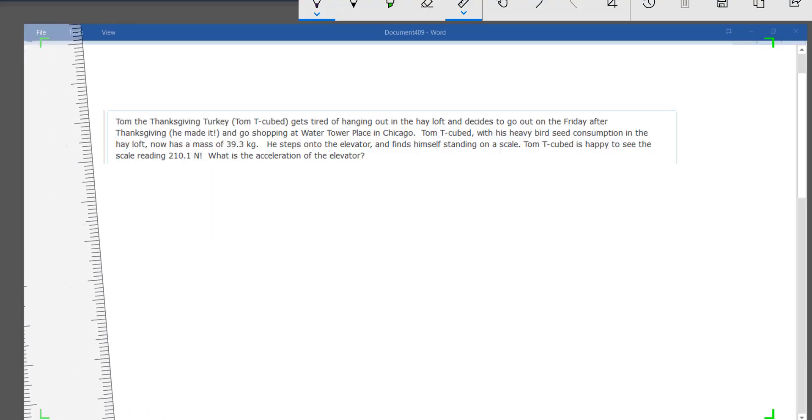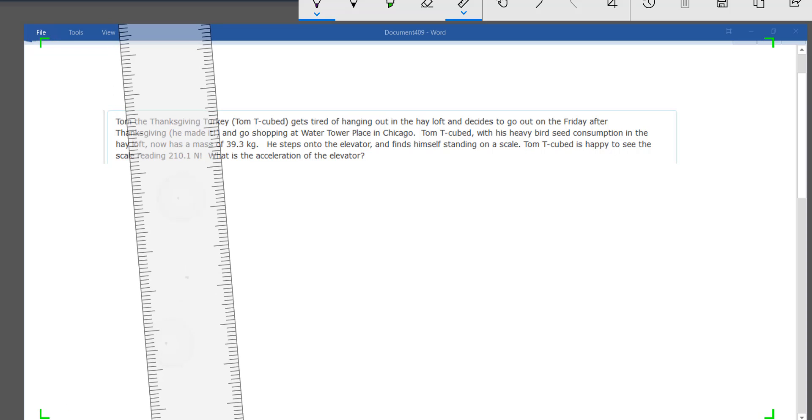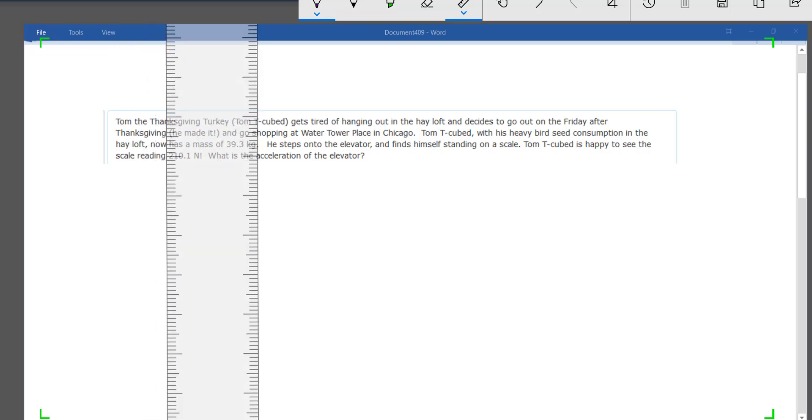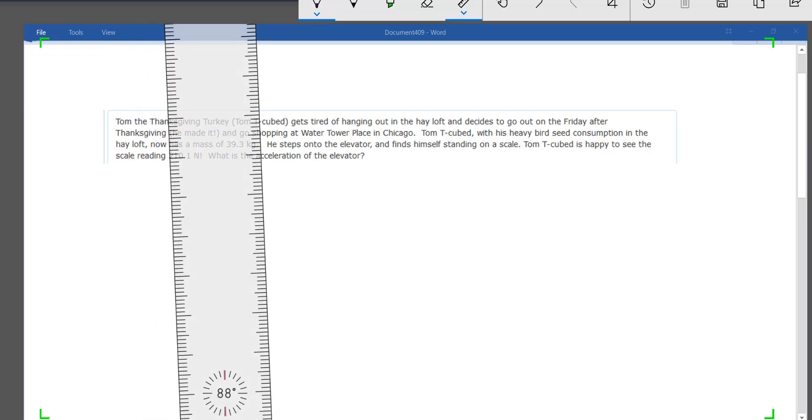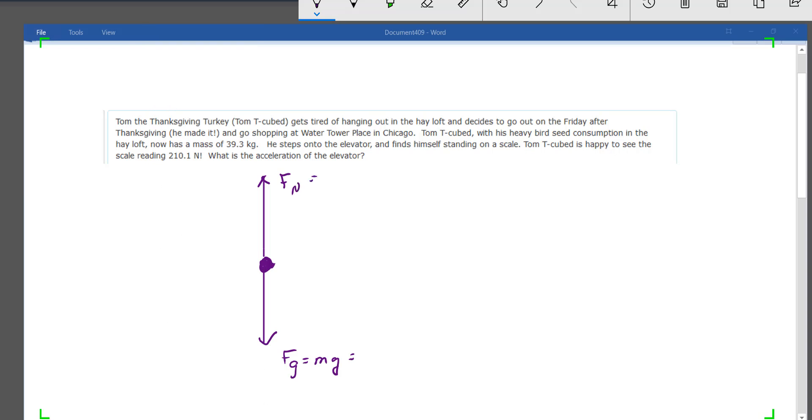Again, we have Tom T. Cube in an elevator at Water Tower Place, and he again has a scale reading, which is way less now. So once again, we start by drawing the free body diagram. We have the force of gravity and the normal force, which could also be called the scale force. And we have his mass, which is slightly different than the last problem.